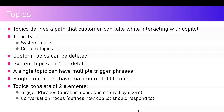A topic basically consists of a couple of elements: trigger phrases and conversation nodes. It can have one trigger phrase and multiple conversation nodes. The conversation node defines how the copilot should respond.